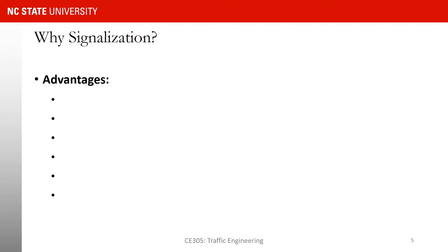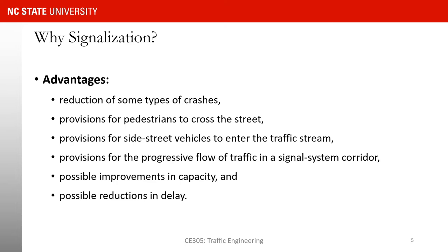Here I would like for you to think about some of the advantages of signalization — why we would install signals at an intersection rather than having stop signs or other forms of traffic control. One of the most important advantages of signalization is the reduction of certain types of crashes. We put signals at an intersection because we don't want two conflicting movements to go through the intersection at the same time.